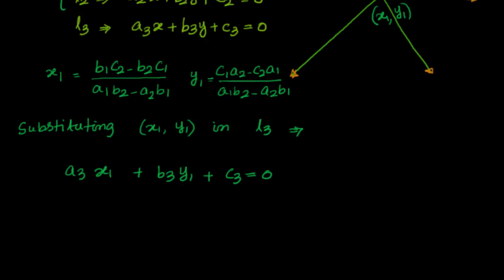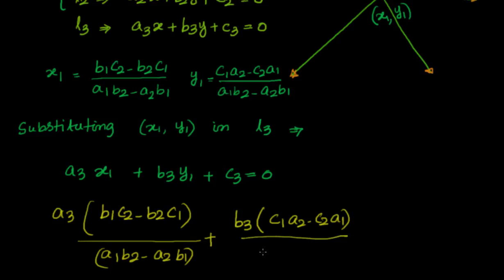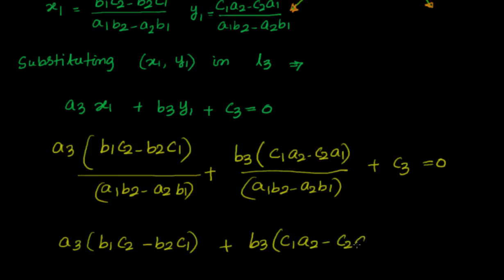Substituting the values, we get: a3·(b1·c2 − b2·c1)/(a1·b2 − a2·b1) + b3·(c1·a2 − c2·a1)/(a1·b2 − a2·b1) + c3 = 0. Taking the LCM, this becomes: a3·(b1·c2 − b2·c1) + b3·(c1·a2 − c2·a1) + c3·(a1·b2 − a2·b1) = 0.